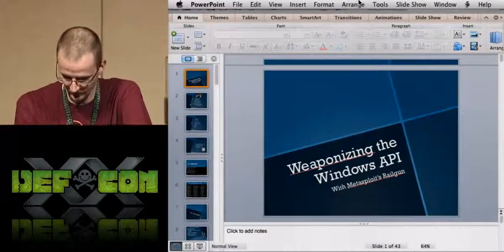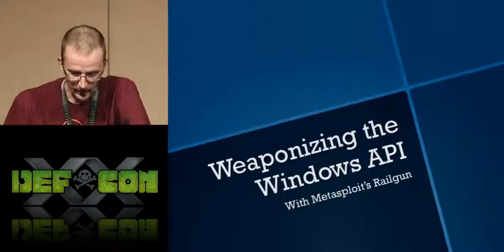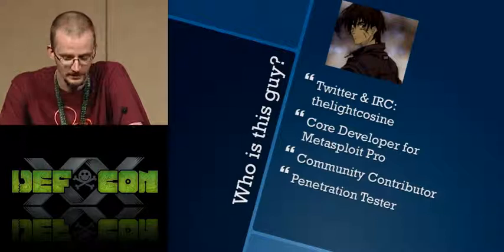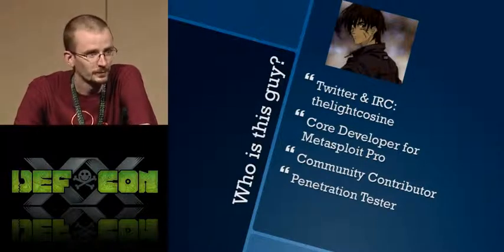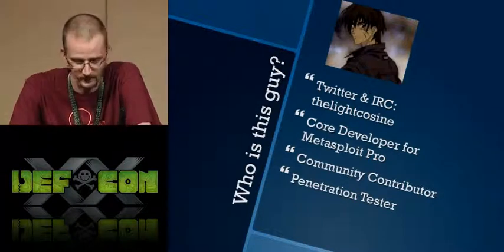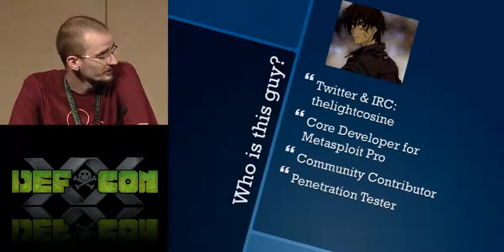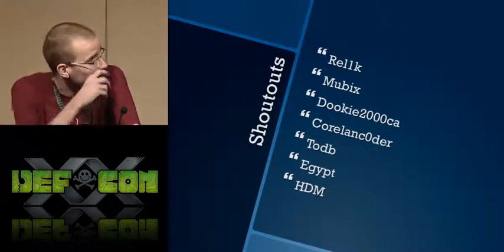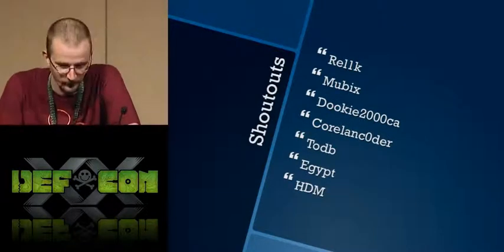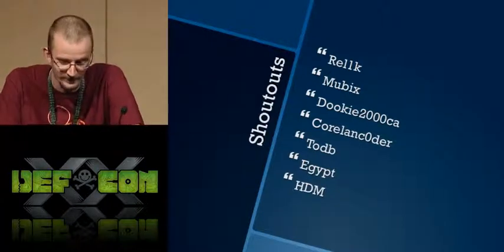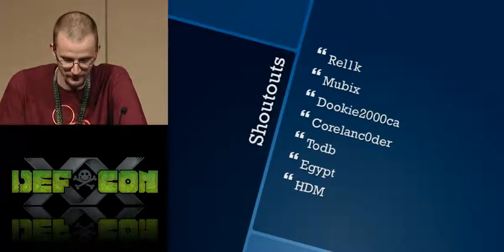This is 'Weaponizing the Windows API with Railgun,' which is an extension of Metasploit. I'm the Light Cosine, one of the core developers for the Metasploit Pro product. Before that, I was a longtime Metasploit framework contributor and a professional penetration tester. I wanted to give a shout out to all the people who helped me get to this point and mentored me.